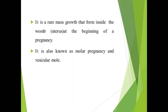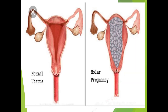The hydatidiform mole is a rare mass which grows from the uterus at the very beginning of pregnancy. Here is a picture depicting the difference between the normal uterus and the uterus with molar pregnancy. It is clear how the molar pregnancy on the right side appears like a bunch of cysts, basically due to the proliferation and degenerative changes which take place in the placenta.